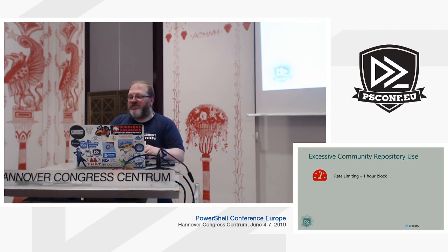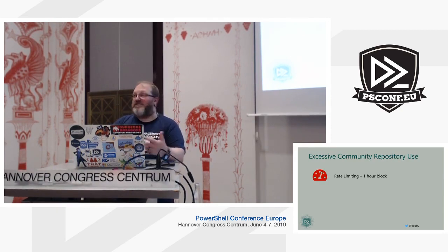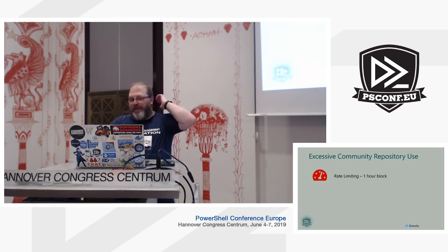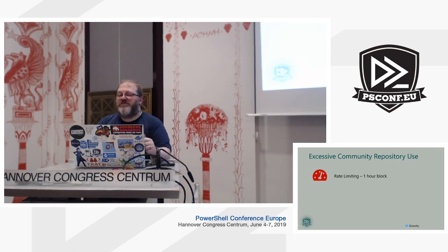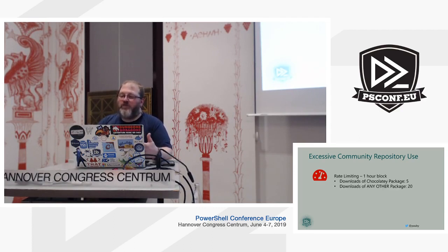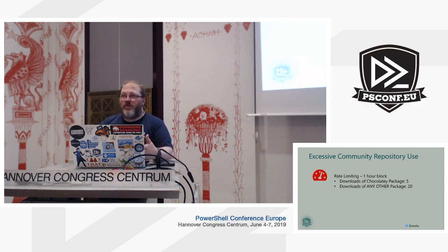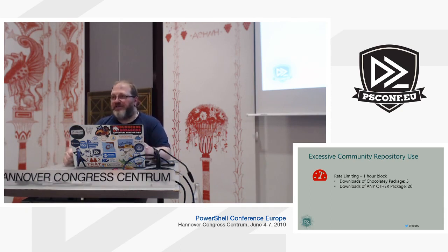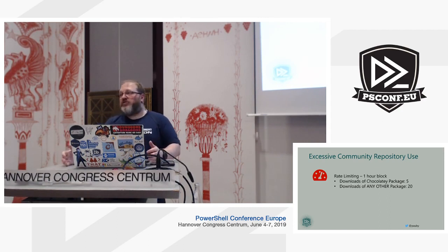Excessive Community Repository use is something mainly organisations hit. Rate limiting was implemented in October/November last year to improve website stability. If you download the Chocolatey package more than five times per minute, or any other package more than 20 times per minute, you'll be blocked for an hour. After that hour the block lifts, and if you hit the limit again you're blocked again. If you're installing a few packages at home here and there, you won't hit these limits — it mainly affects organisations. Chocolatey.org is a free resource for everybody.